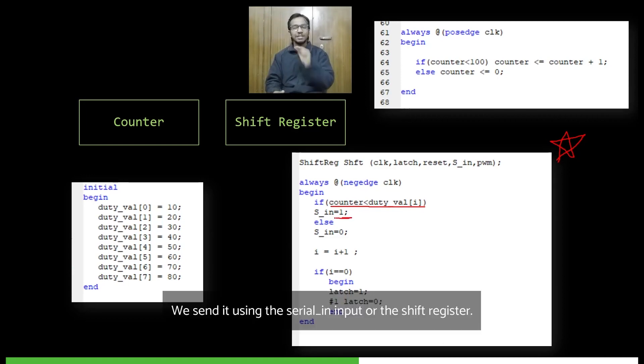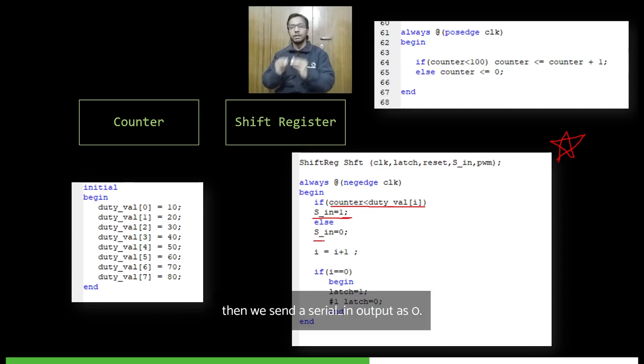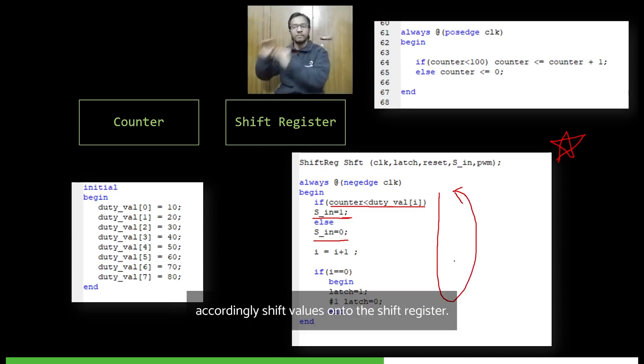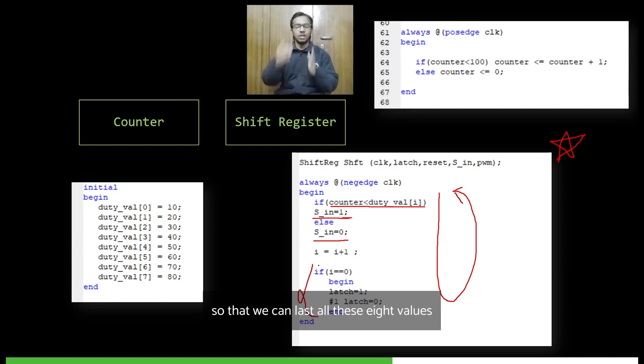And if this counter value is greater than the duty cycle value, then we send a serial-in output as zero. This serial-in value goes to our shift register and on the next clock pulse gets shifted to the shift register. So we cycle through all these duty cycle values and accordingly shift values onto the shift register. And after the eighth value, we simply send a pulse onto the latch signal so that we can latch all these eight values that we just shifted.